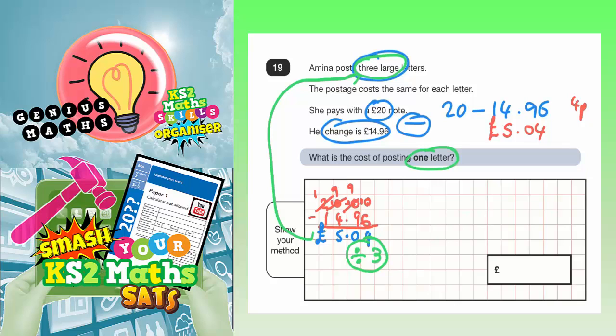So, what I'm going to do now, I'm going to do a bus shelter method. So, five pound four divided by three. Three's into five goes one, remain the two. That now makes 20.